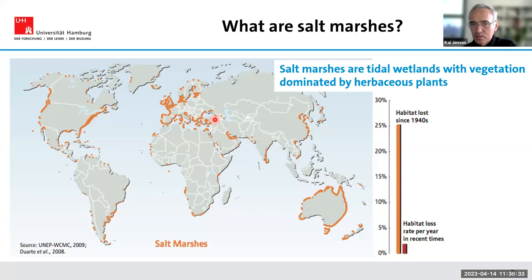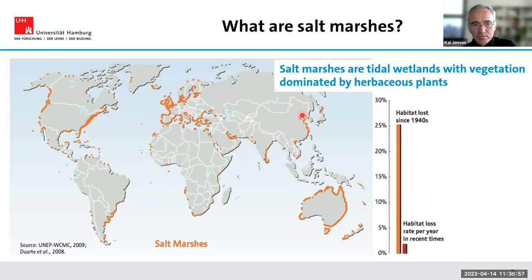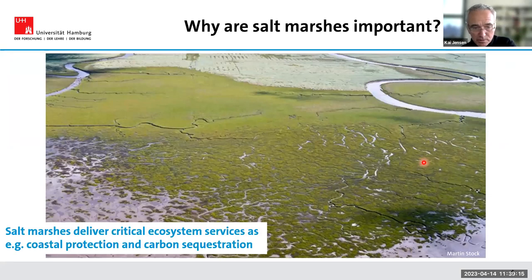First of all, what are salt marshes? Most of you will know that salt marshes are tidal wetlands whose vegetation is dominated by herbaceous plants. They are distributed along coastlines worldwide, especially in the temperate zone — in North America along the Atlantic and Pacific, in Australia, along the European coast, and in China. We work in the northern part of Germany, near the bridge to Scandinavia. These tidal marshes deliver critical ecosystem services, including coastal protection and carbon sequestration.